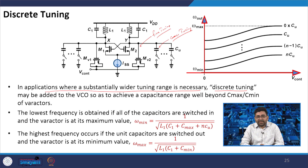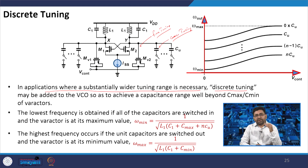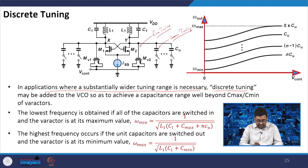To achieve a capacitance range well beyond C_max/C_min — the limitation of using only a varactor diode — the lowest frequency is obtained when all capacitors are switched in and the varactor is at its maximum value, giving omega_min = 1/√(L1 × (C1 + C_max)). The highest frequency occurs when the unit capacitor is switched out and the varactor is at minimum. For coarse tuning, we switch capacitors; for fine tuning, we use V_control.